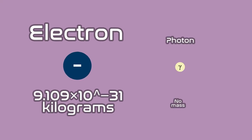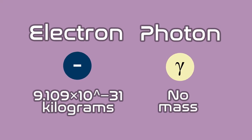While some of these particles, like electrons, have mass, particles like photons are massless. So why do some particles have mass while others don't? I mean, isn't something's mass an intrinsic characteristic? Well, actually, no.